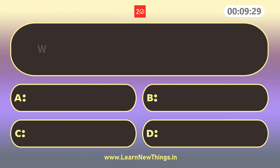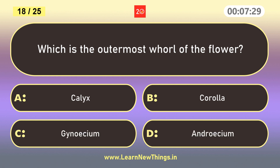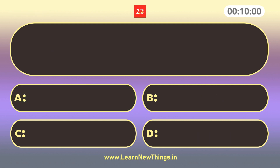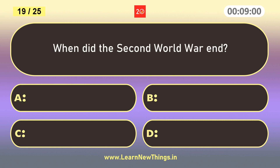Alpha. Which is the outermost whorl of the flower? When did the Second World War end? 1945.